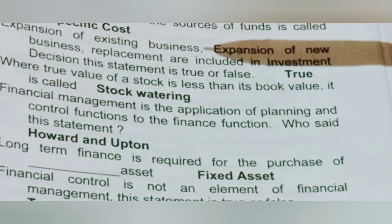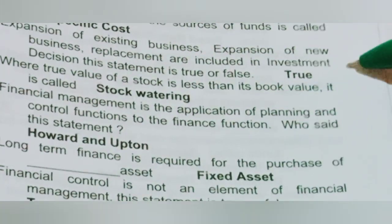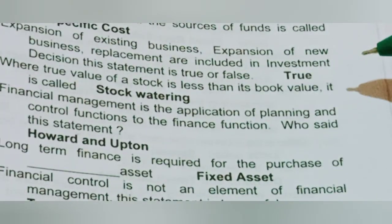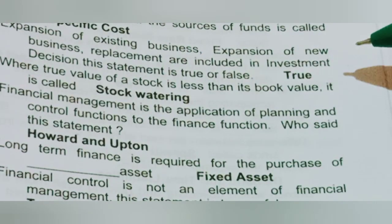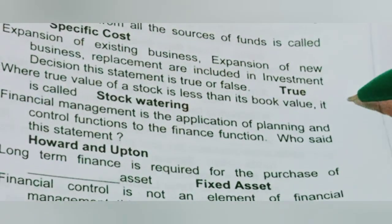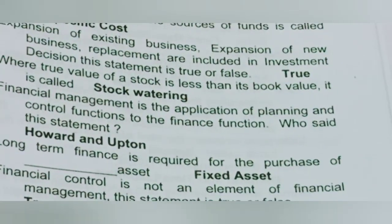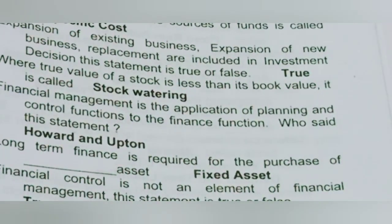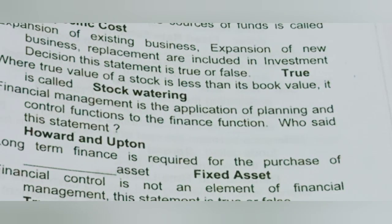Expansion of existing business, expansion into new business, and replacement are included in investment decision. This statement is true or false? If you do business expansion, new business, or replacement, these are all included in investment decisions — that is true.